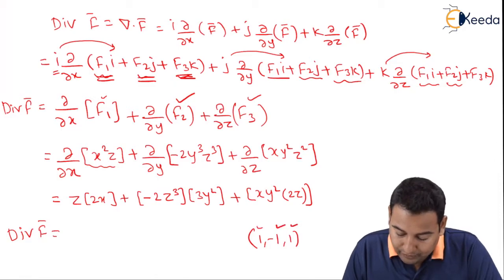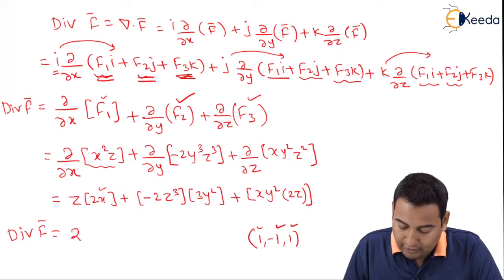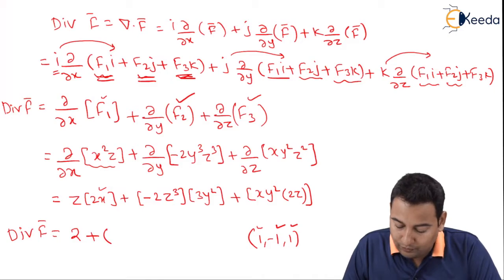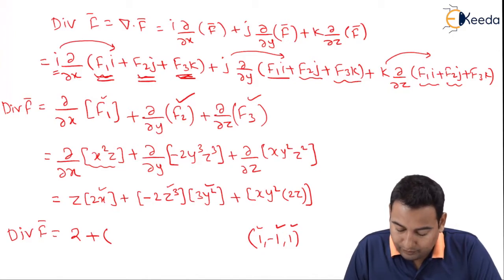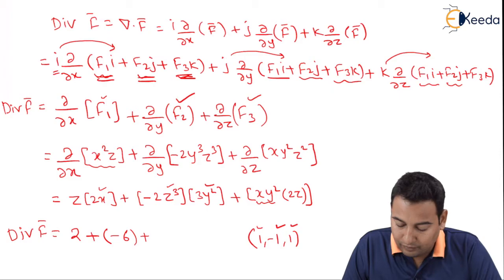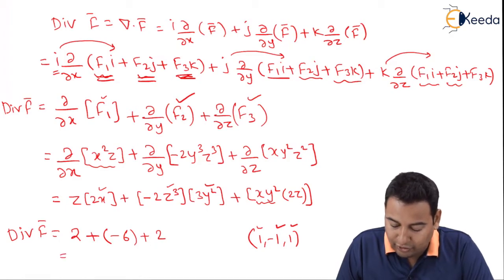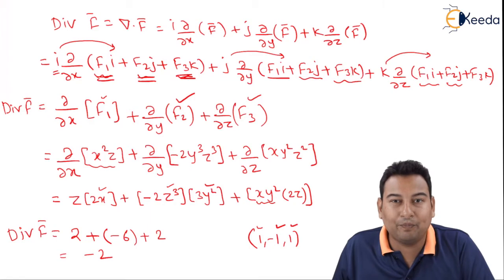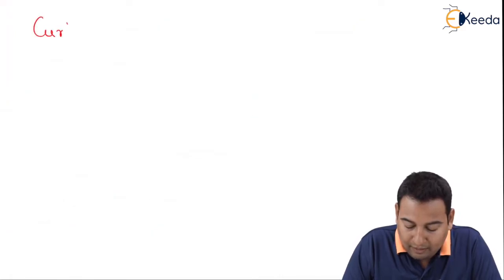At point (1, −1, 1): substituting x=1, z=1 gives 2x·z = 2. For the second term, z=1, y=−1, y²=1, so −6y²z³ = −6. For the last term, x=1, y=−1, z=1, so 2xyz² = 2. Simplifying: 2 − 6 + 2 gives the answer −2. This is the divergence of f̄. We are done with divergence. Let's now check for curl of f̄.